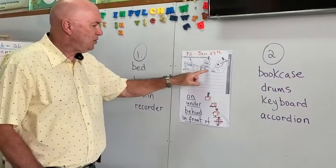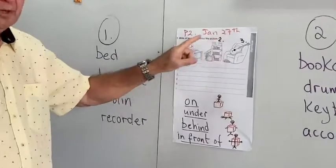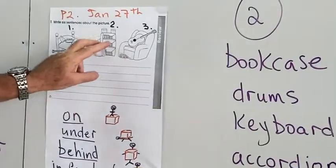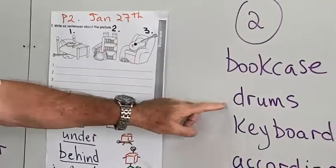Let's look at picture two. What have we got in picture two? Well, there's a bookcase, some drums, a keyboard, and the accordion.